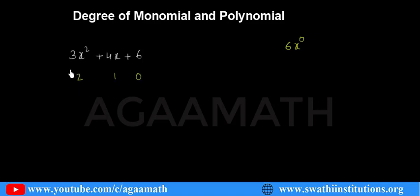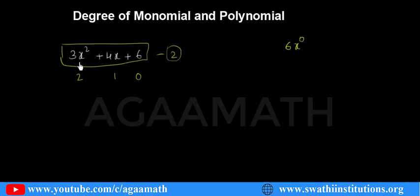The degree of the constant 6 is 0, because 6 can be written as 6x⁰. Now which degree is the highest among 2, 1, and 0? The value 2 is greatest, so the degree of the polynomial 3x² + 4x + 6 is 2.